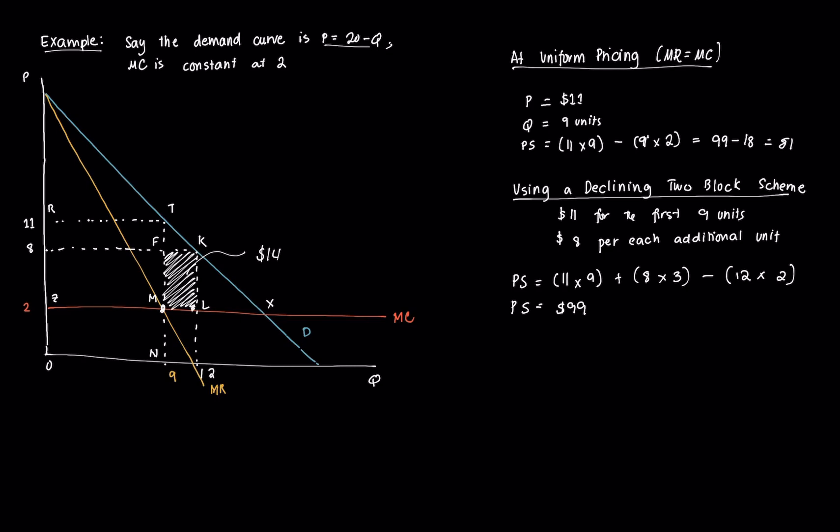Now, the question for the monopolist is this, what is the optimal block tariff that can maximize producer surplus and therefore profit for each profit gain from each consumer? So what we do is, for simplicity, we assume that the firm's tariff consists of only two blocks. So for simplicity, in most of our examples, we'll just say it's a two-block pricing scheme and the individual's demand curve is represented as P is equal to A minus BQ.